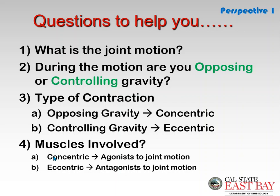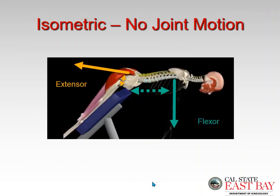Let's look at an example. First, here's an example of an isometric — no joint motion. Your torso is a load acting at a moment arm, creating a flexor torque at your hip. That's the external torque, and the internal torque comes from your hip extensor muscles creating that hip extensor torque.